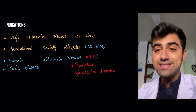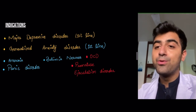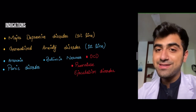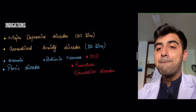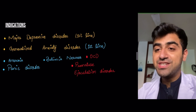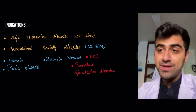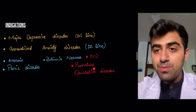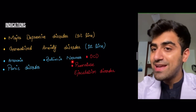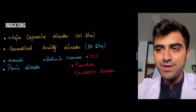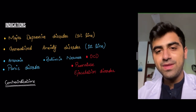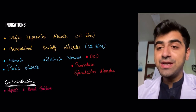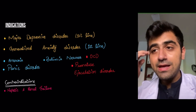Other disorders for which SSRIs are indicated include anorexia nervosa, bulimia nervosa, OCD (obsessive compulsive disorder), panic disorder, and premature ejaculation disorder — which we will discuss further when covering adverse effects.